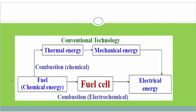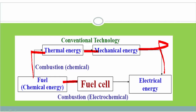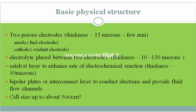For conventional technology, we need fuel combustion — thermal energy is produced, then converted to mechanical energy, and finally to electrical energy. But in the case of a fuel cell, the fuel is directly allowed to flow inside the fuel cell and converted into electrical energy.